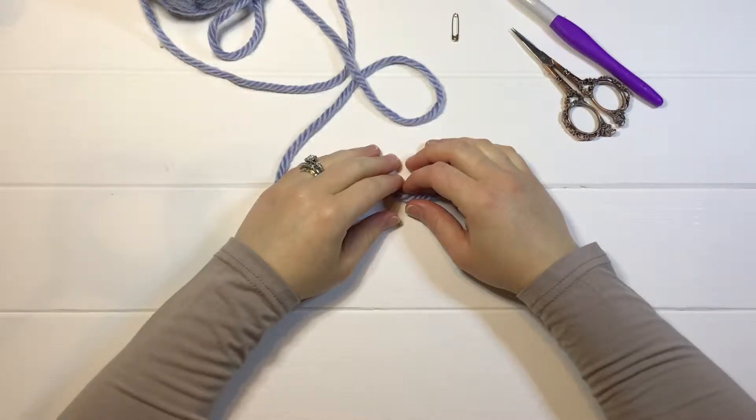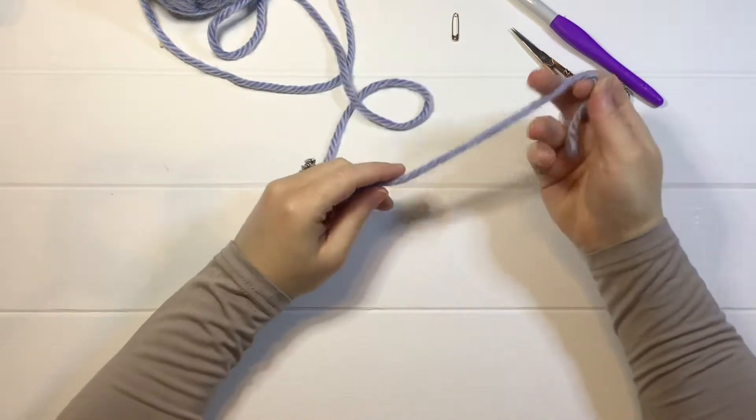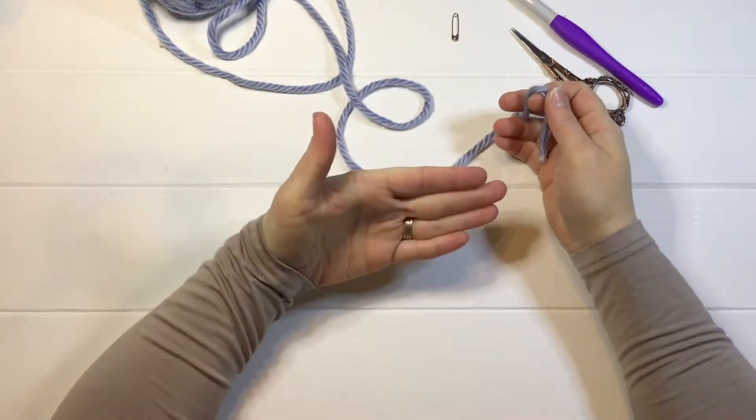Today I'm going to show you how to make the magic circle. You're going to start out by taking the tail of your yarn, putting your hand like this.